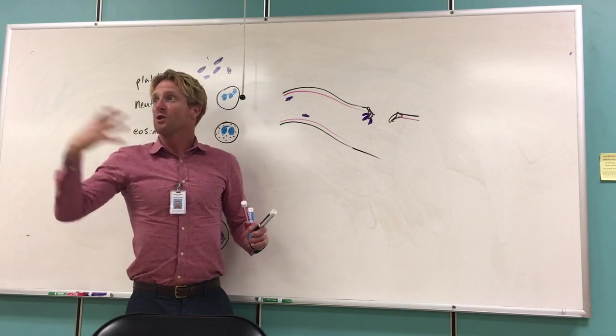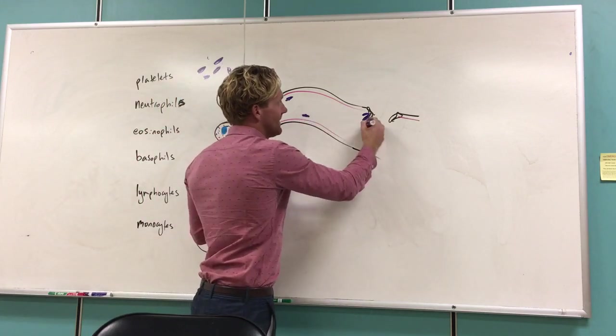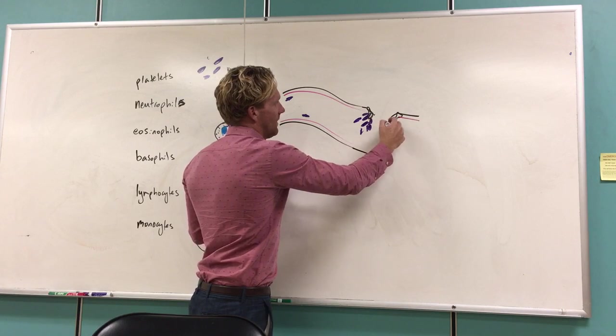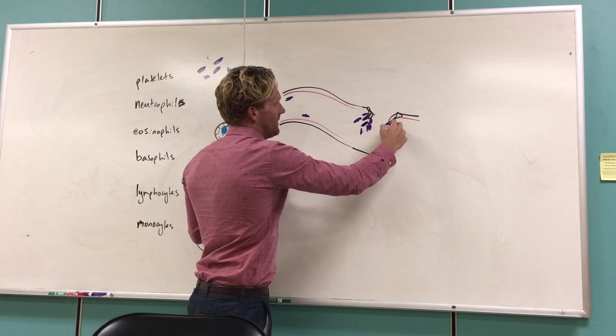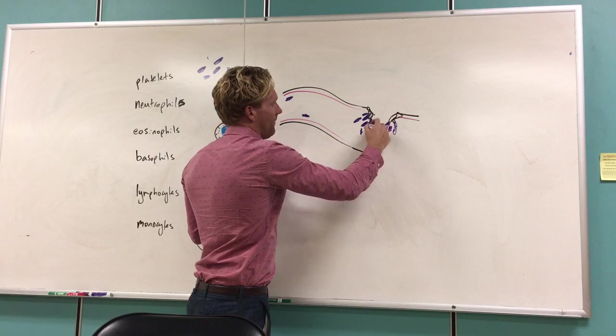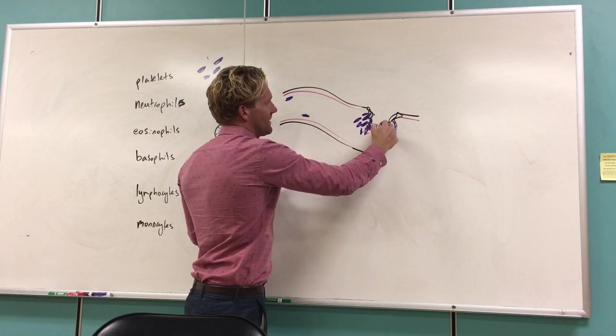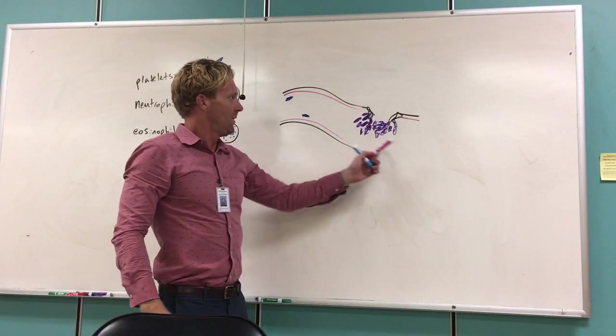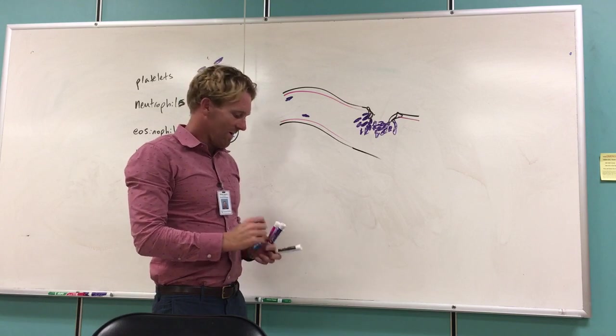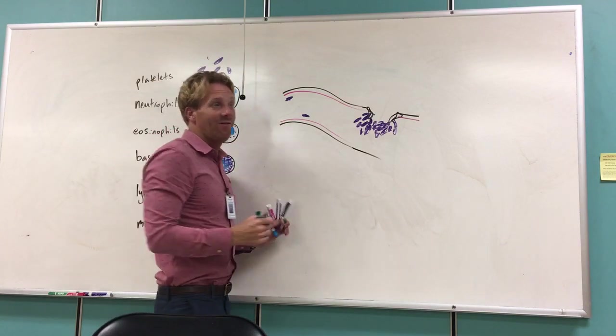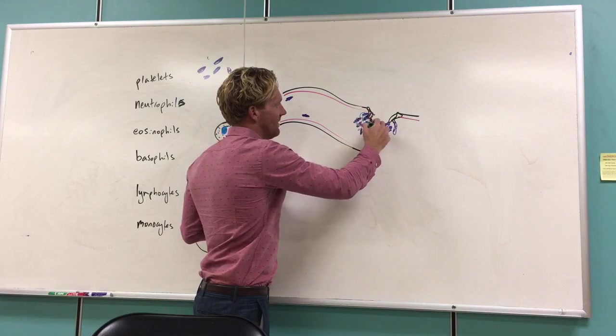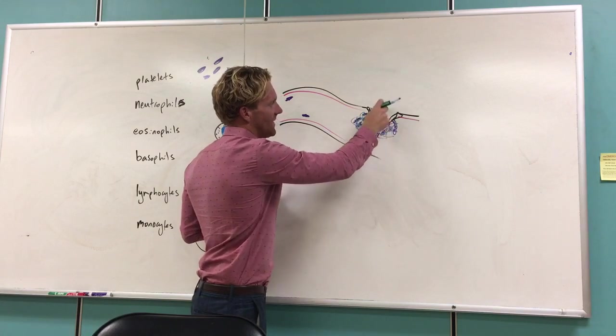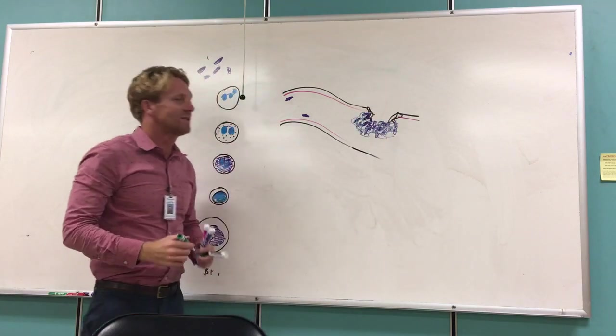In addition, the platelets get very sticky, so we're going to have a collection of platelets that attach to this break in the vessel. As more and more platelets respond and stick to each other, this little initial clot is going to be reinforced with a protein called fibrin. This fibrin reinforces the network of platelets, and now we have a true clot that is able to plug this vessel and prevent any blood from escaping.